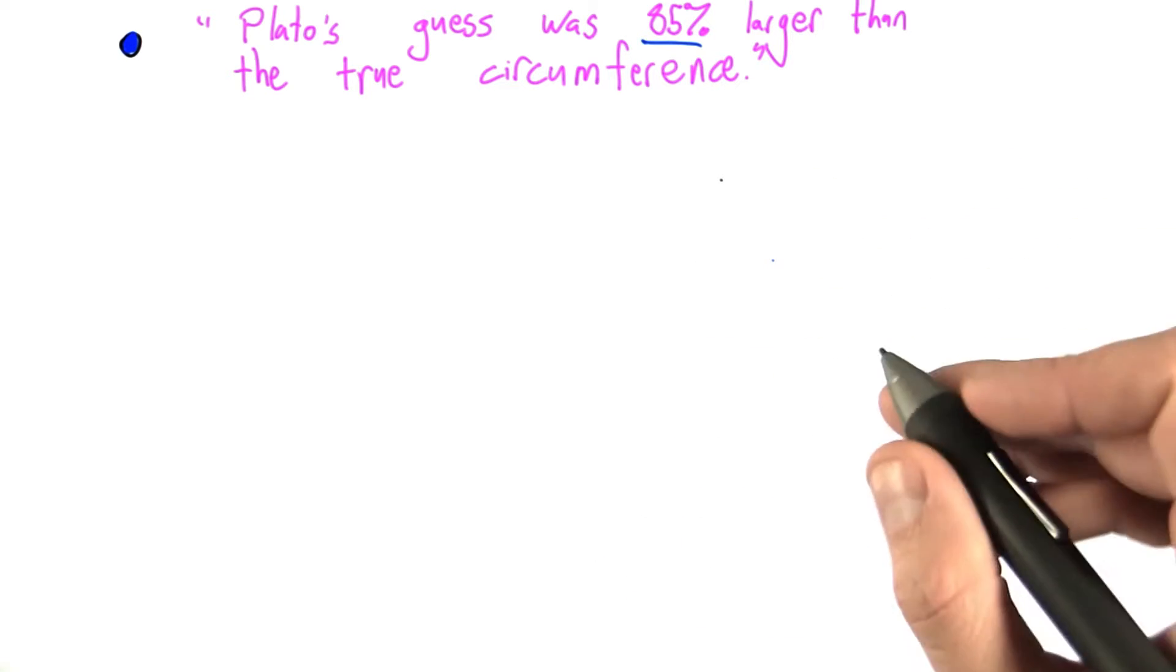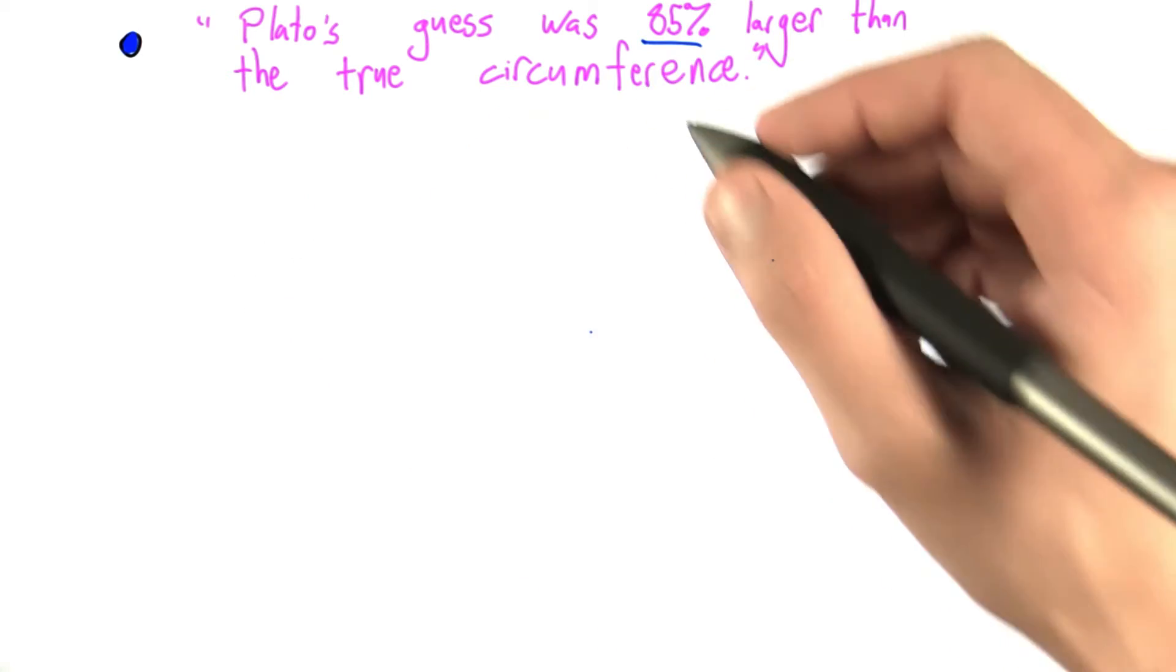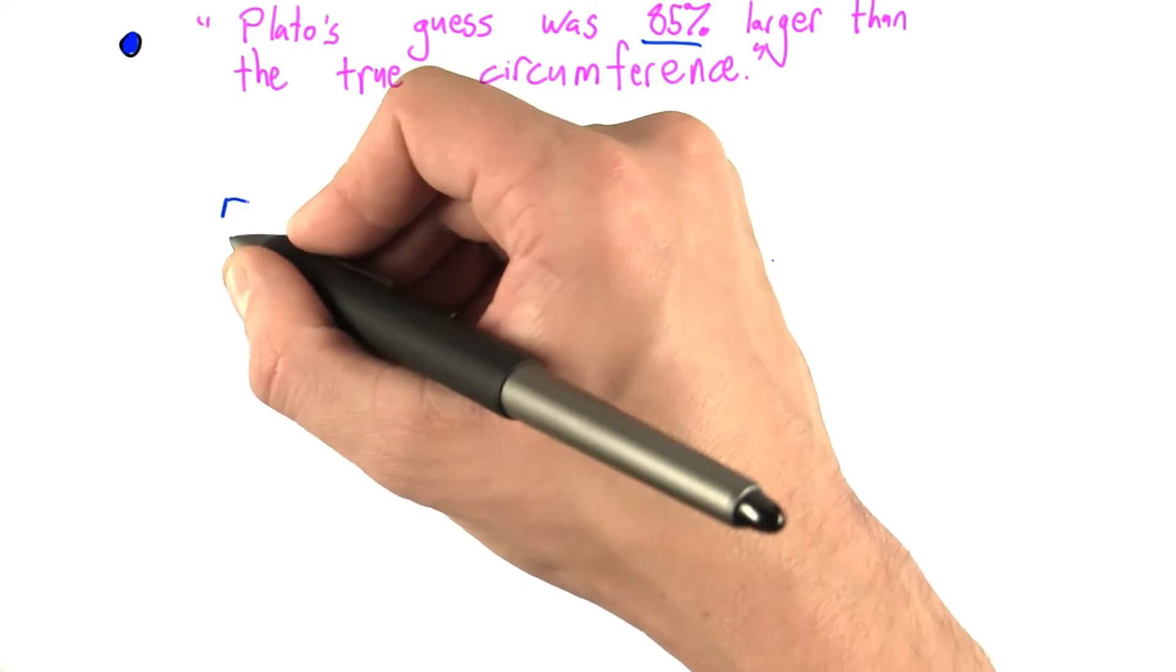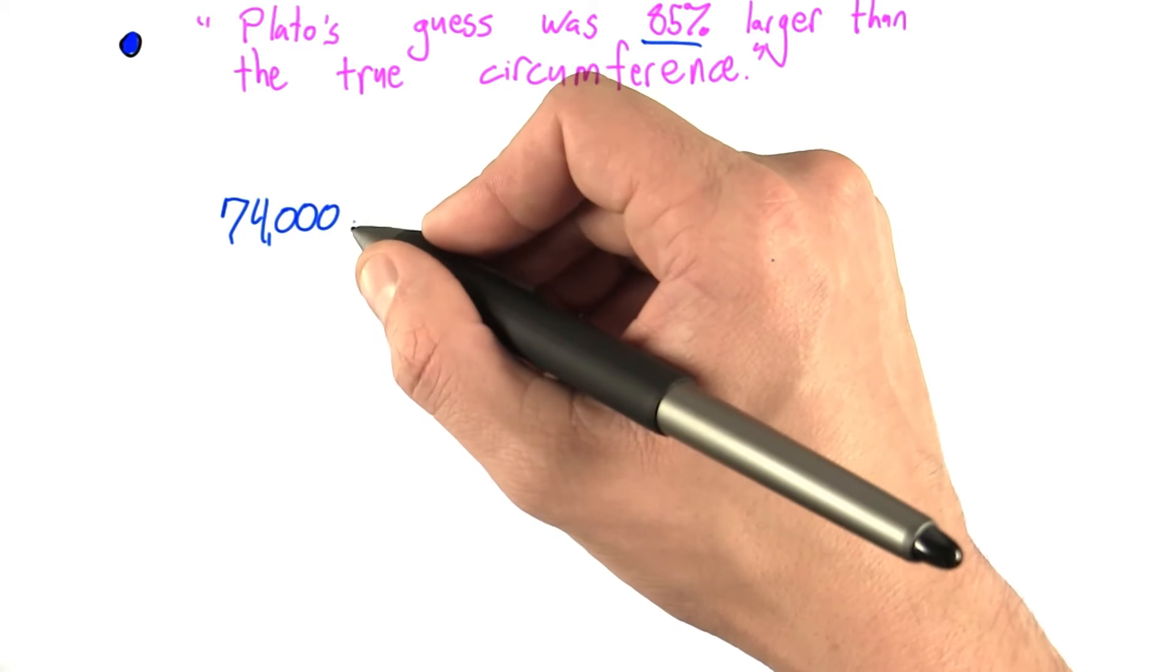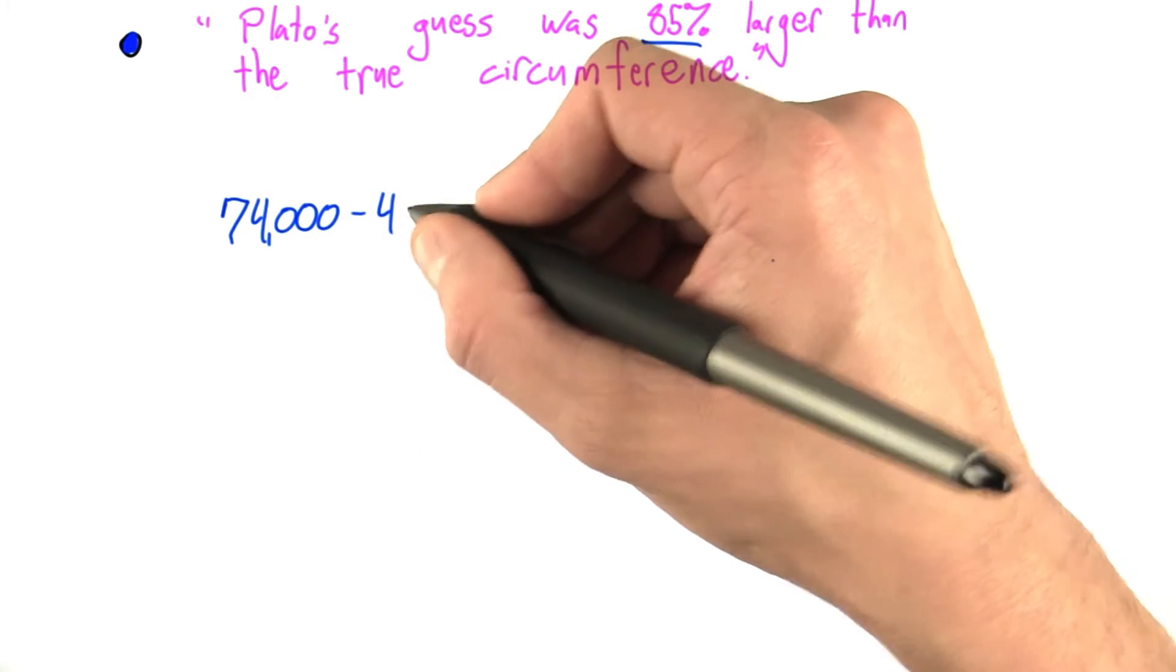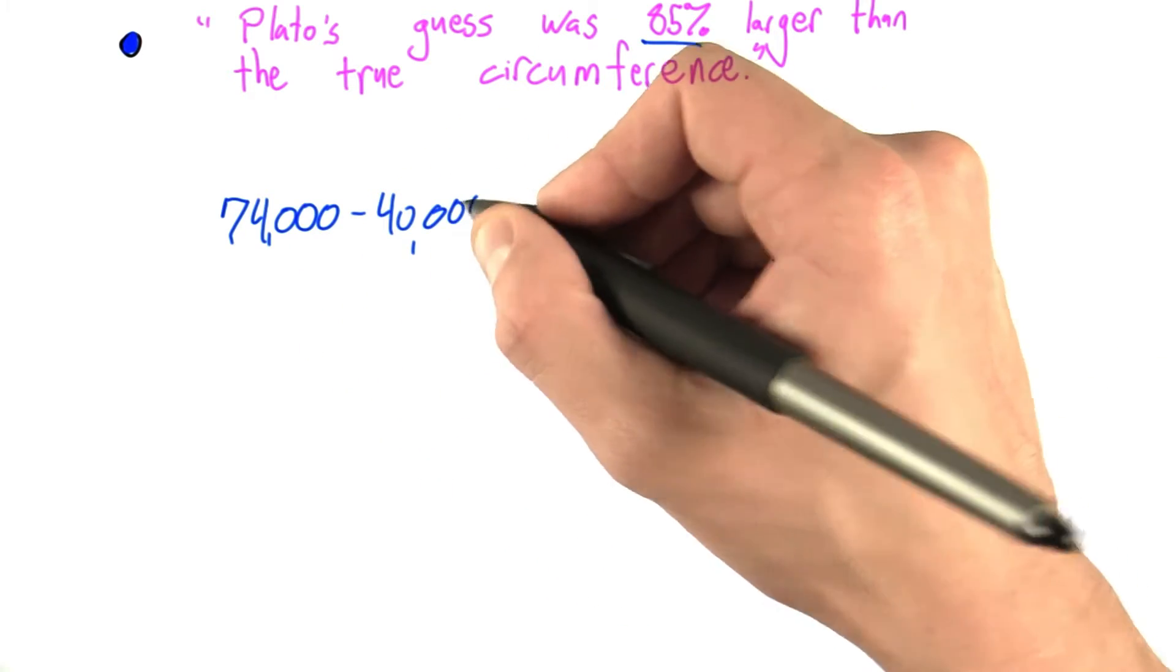All we do is look at the absolute error. So in this case, the absolute error was Plato's guess, 74,000, minus the actual circumference of the Earth, 40,000.